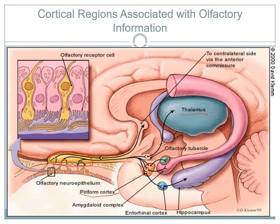Within the piriform cortex, it decides what specialized areas it needs to move on to — places like the amygdala and the hippocampus. A lot of times when we smell something, we rely on memory to determine what that smell is, drawing back on smells we've had in the past. If it's a smell we don't like or consider a threat, it passes to those amygdala regions in order to visit that fight-or-flight response.